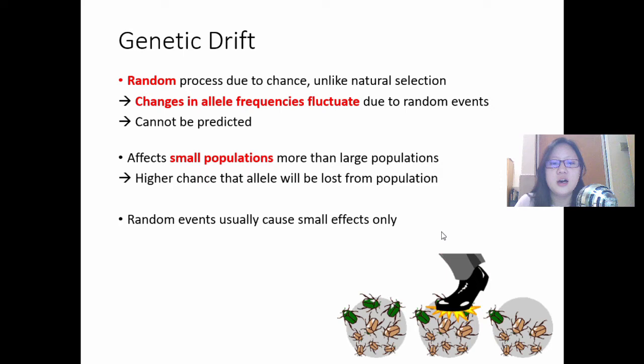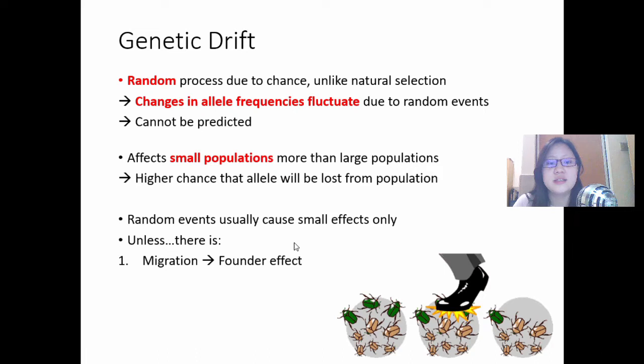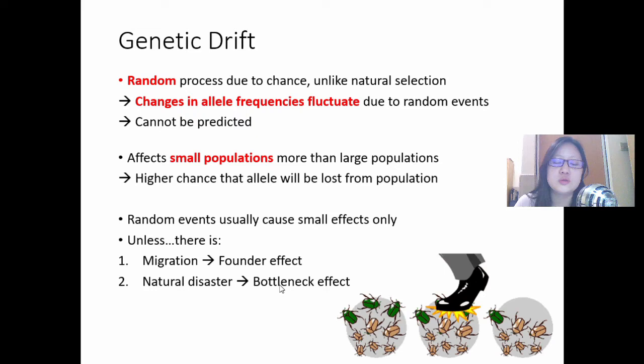Random events usually cause really small effects because they only affect a few random individuals — like some wind that blows away a few ants or accidents that happen to animals. But there are some cases where random events cause big effects, for example migration. This type of genetic drift is called the founder effect. Or a natural disaster — a huge event that causes many individuals to die at once — is called the bottleneck effect.